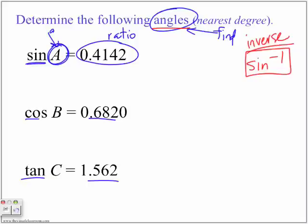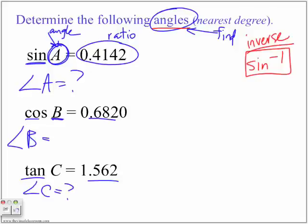In this place, we usually have an angle, but that's what we're trying to find. We're trying to find angle A. What is angle A? We're trying to find here, what is angle B? Here, we're trying to find what is angle C.